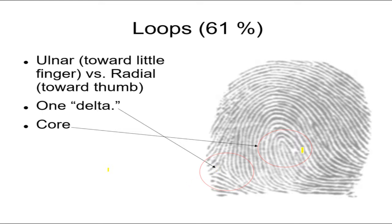So again, kind of pay attention to those, the core and the delta. A loop has a core and has one delta, only one. If it has two deltas, it's not a loop.